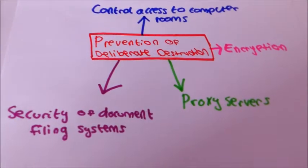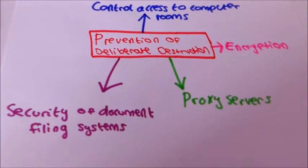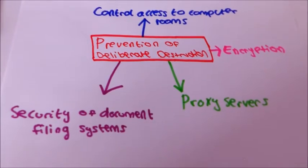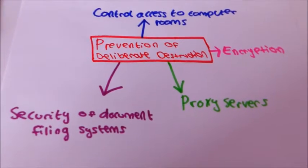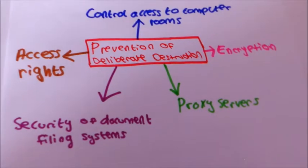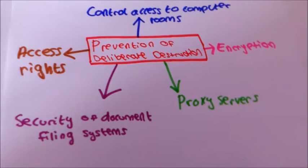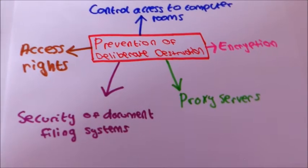The security of document filing systems means that printouts should be locked away and personal data should be shredded to prevent deliberate destruction. The final method is access rights such as password systems to create a hierarchy of access and create access levels.